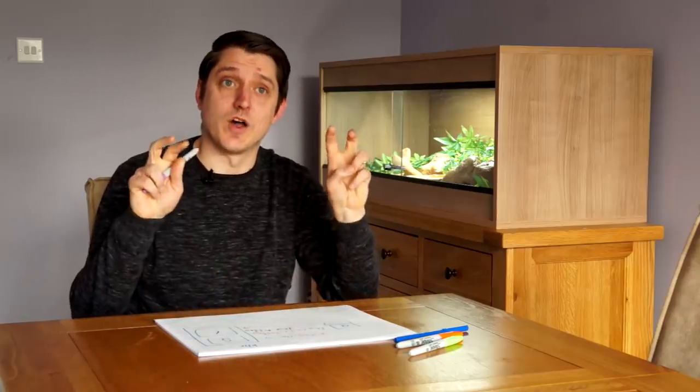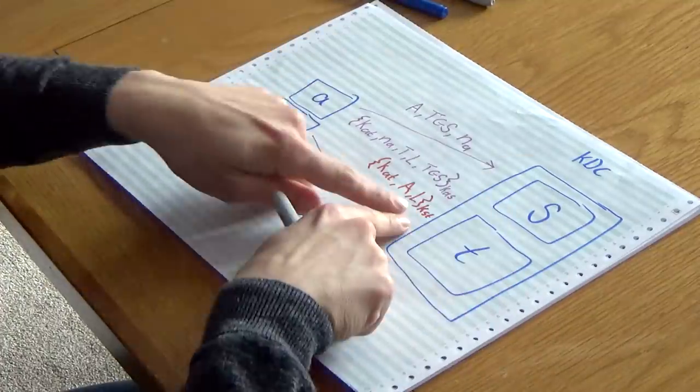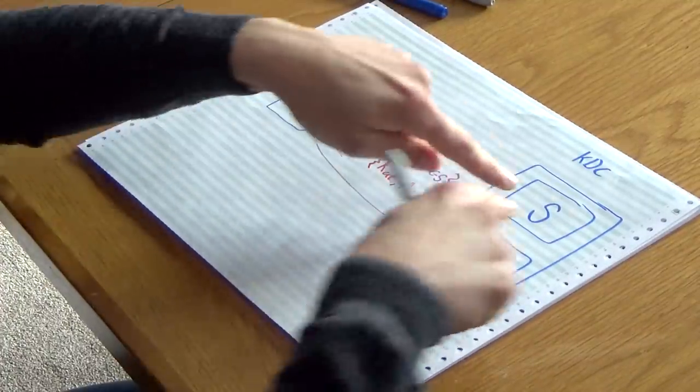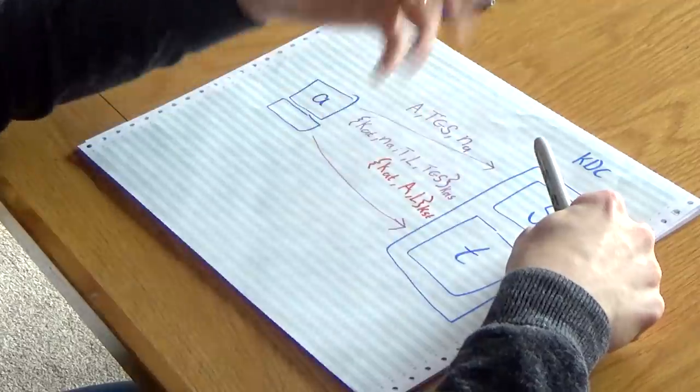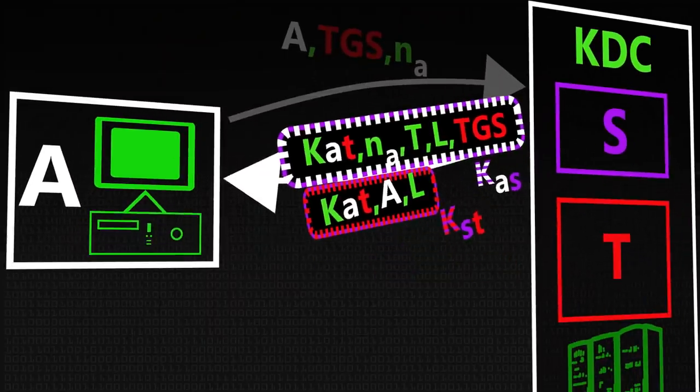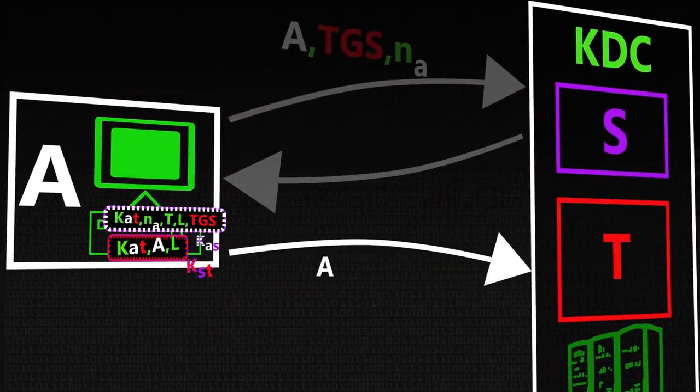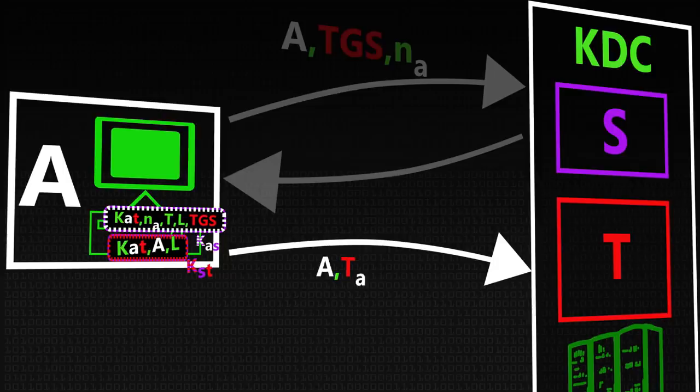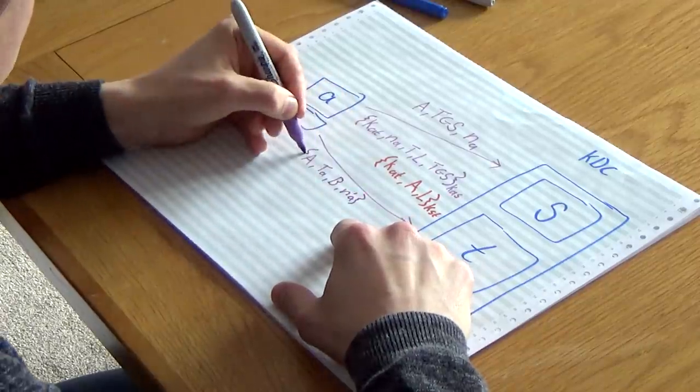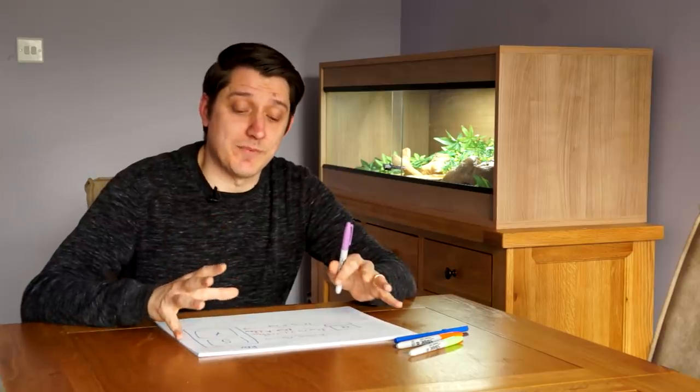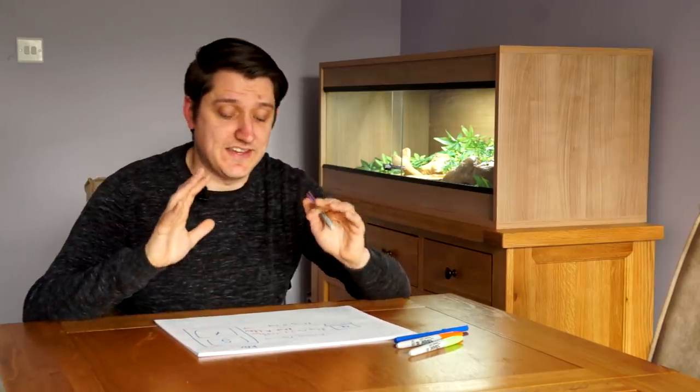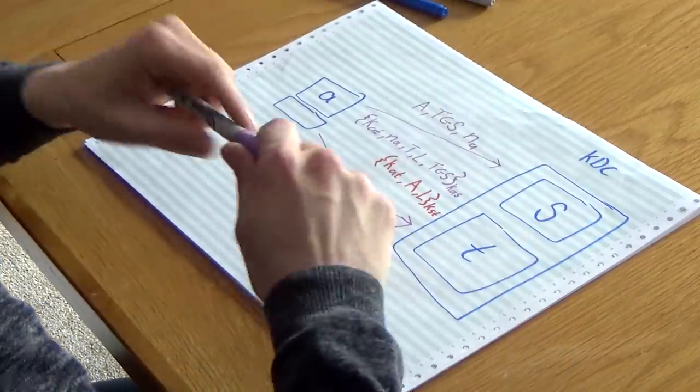And this has kind of been stamped, as it were, it's been authenticated by the fact that it's encrypted by KST, which is the authentication server's private key with this T here. So I'm going to send, my name is A, this is a timestamp to make sure everything is taking place at the right time. I'd like to talk to B, please. And this is some new random number that we're going to use to prevent replay attacks.